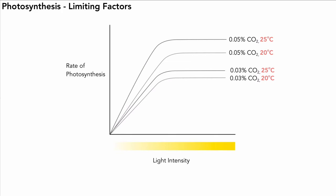The key is to use this information to decide what conditions to maintain in the greenhouse. Raising CO2 to 0.05% while keeping temperature at 20 degrees gives a bigger jump in rate compared to the same CO2 at a lower temperature. The very highest rate is achieved at 0.05% CO2 and 25 degrees centigrade, giving the maximum rate of photosynthesis and therefore the maximum rate of plant growth.